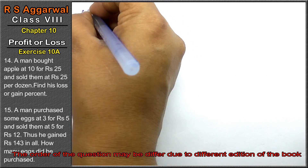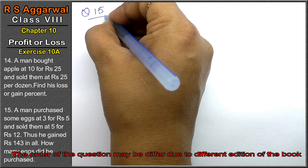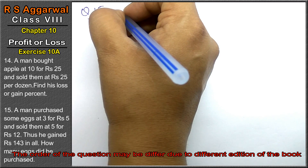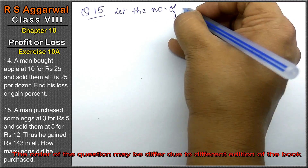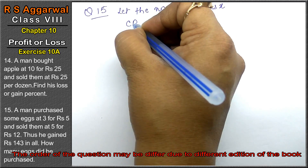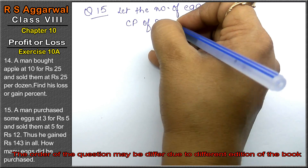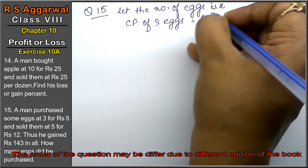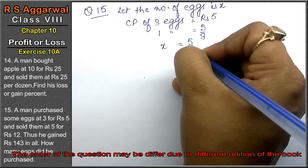Now let's do question 15 of exercise 10A. Question 15: A man purchased some eggs at 3 for rupees 5. Since the number of eggs is not given, let the number of eggs be x. So cost price of 3 eggs is rupees 5, meaning 1 egg costs 5 upon 3, and x eggs cost 5x upon 3.